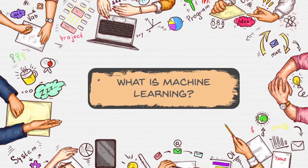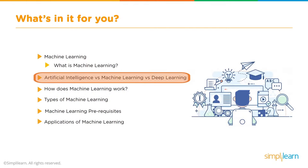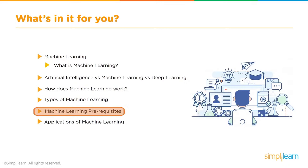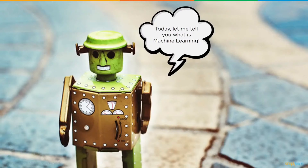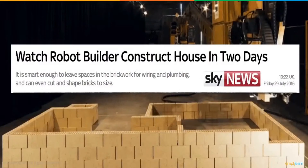My name is Richard Kirschner from the SimplyLearn team. Today we're covering what is machine learning, AI versus machine learning versus deep learning, how machine learning works, types of machine learning, prerequisites, and applications. Machine learning works on the development of computer programs that can access data and automatically learn and improve from experience.